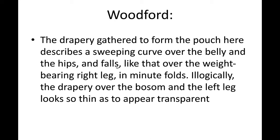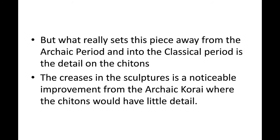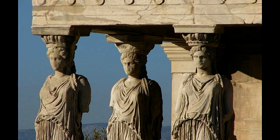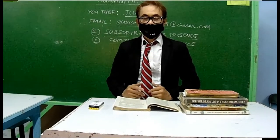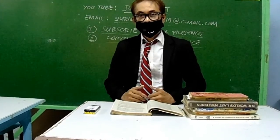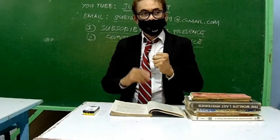Looking at the drapery, you can see that the folds of the Karyatid figures' garments are all different. Although the style of dress and the braiding of their hair are similar, there are visible differences in the details — confirming that these were not fabricated but individually hand-crafted, one by one.